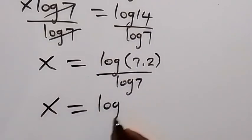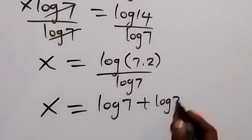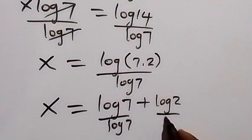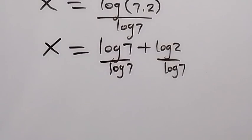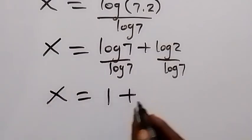This means log 7 divided by log 7 and also log 2 divided by log 7. On this side, log 7 cancels, that's 1. So we have x equals 1 plus log 2 over log 7.